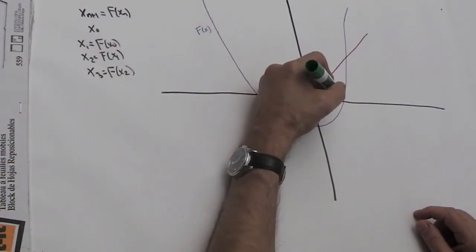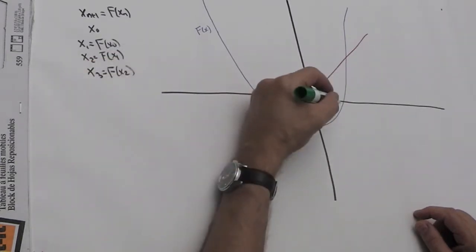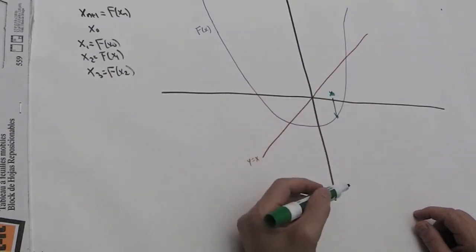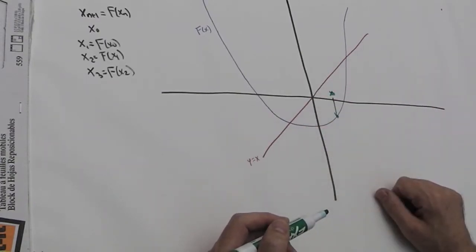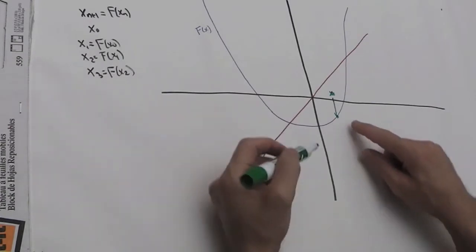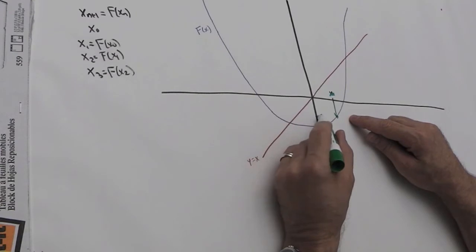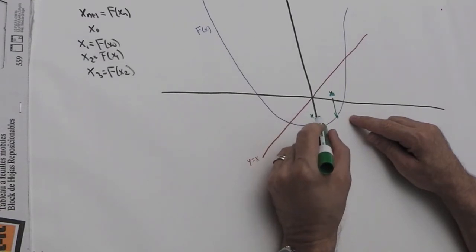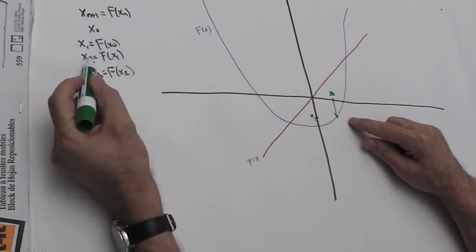Suppose I pick x_0 here. I want to take f(x_0), which means go to the graph of f in blue. The red line is y = x. Now I need to take the output, which is x_1, and make that an input so I can find x_2.